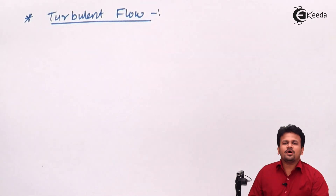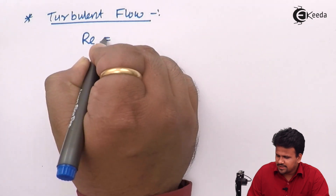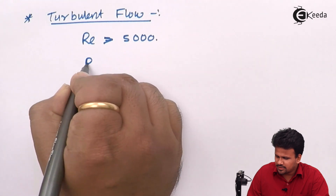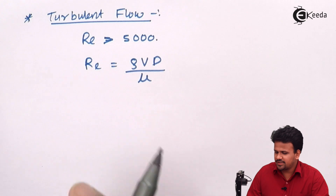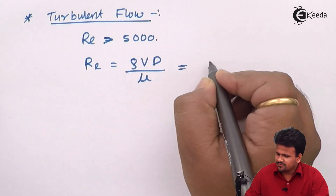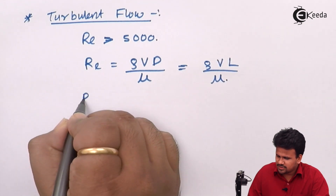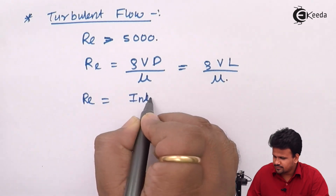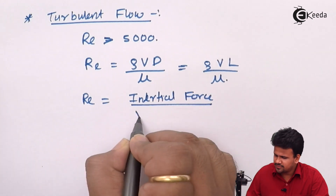For turbulent flow, we should know that the Reynolds number is greater than 5000. We know that Reynolds number is equal to rho·V·d divided by mu. If it is on a free surface, this can be given as rho·V·dL upon mu. It is also defined as the ratio of inertial force to viscous force.